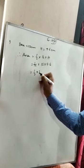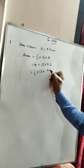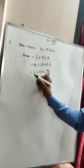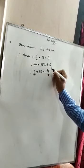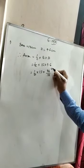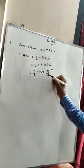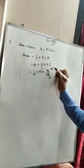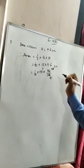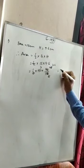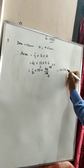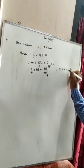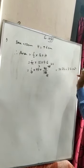We will remove the decimal point — 9.6 has one decimal place, so we put 10 in the denominator. We can cancel 2 with 10 to get 5, then cancel 5 with 15 to get 3, then cancel the remaining 2 with 2 to get 1. So we are getting 3 into 24. 3 into 24 is 72. Therefore, area equals 72 cm square.